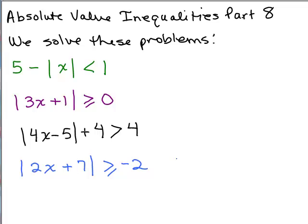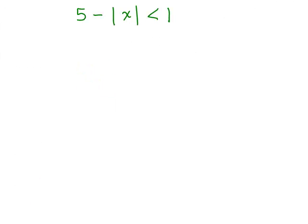This is part eight of absolute value inequalities and we're going to solve the following inequalities on this video. These are the tricky ones. Here's a problem: five minus the absolute value of X is less than 1.